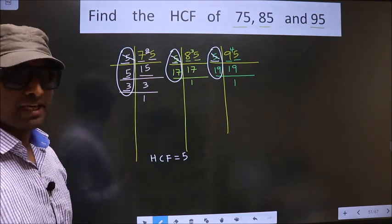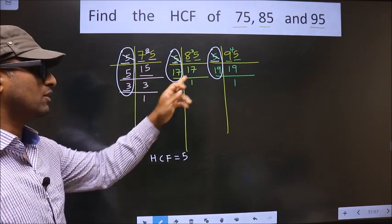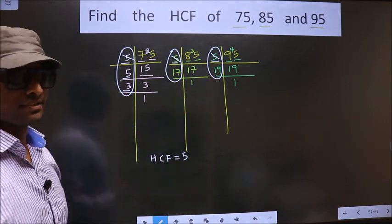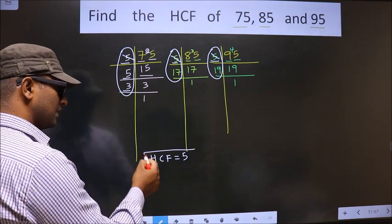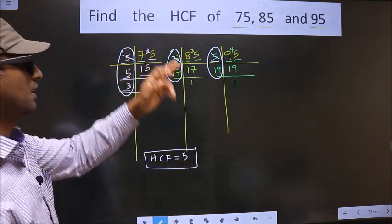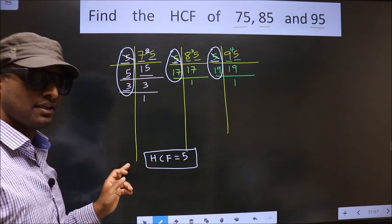Therefore, we have only one number 5 present in all three places. So this is our HCF. Am I clear?